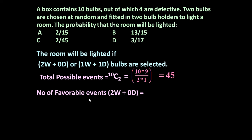Now favorable events: if we select 2 working and 0 defective bulbs. Out of 10, 4 are defective, which means 6 are in good working condition. So 2 bulbs we want to select in working condition — that is 6C2. Because 6 working bulbs are there and we want to select 2. 6C2 means 6 × 5 divided by 2 × 1, which is equal to 15. So there are 15 different combinations possible if we select 2 working bulbs out of 6 working bulbs.